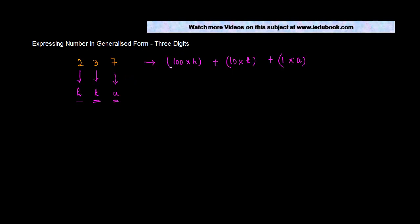So let's say if someone were to ask you to write down 237 in this breakup form, what will you write? You will write this as 100 into h, h is equal to 2, plus 10 into t, t is equal to 3.